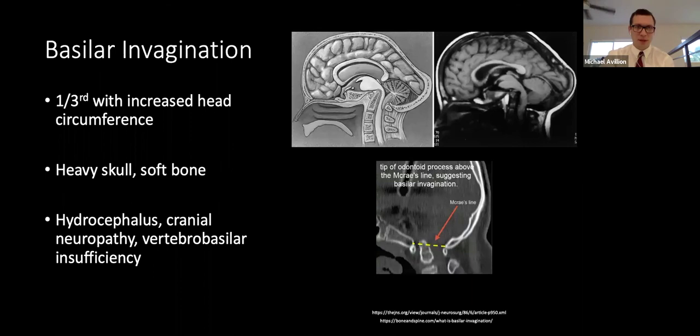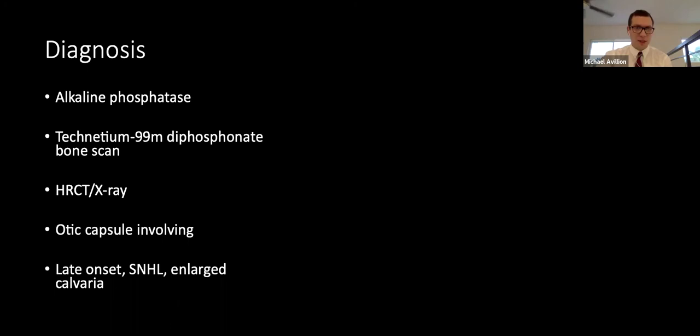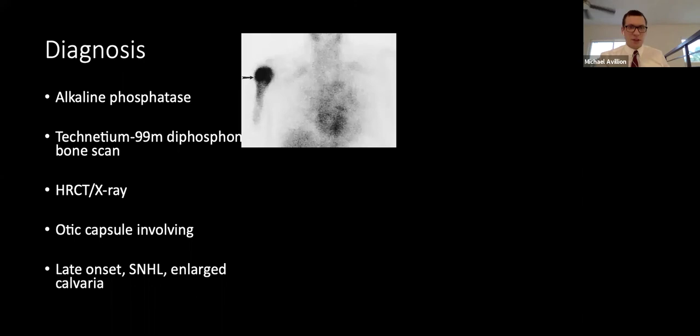Basilar invagination may occur in Paget's disease because one-third of patients have increased head circumference and soft, heavy bone, leading to sagging of the foramen magnum over the odontoid process. This can cause hydrocephalus, cranial neuropathy, and vertebral basilar insufficiency. Aside from biopsy, the disease is diagnosed radiographically and with laboratory values: elevated alkaline phosphatase from bone turnover, and technetium-99 diphosphonate bone scan, which is the most sensitive imaging modality to detect pathologic changes.